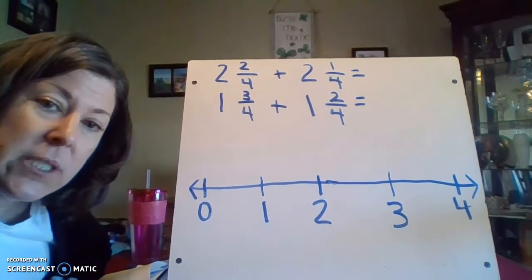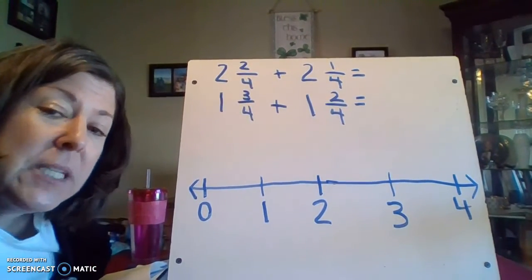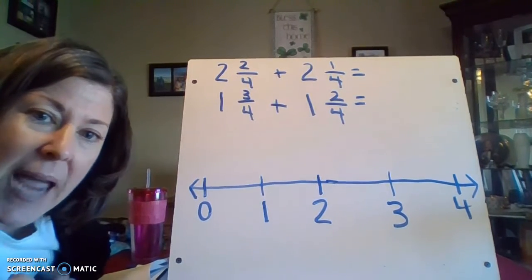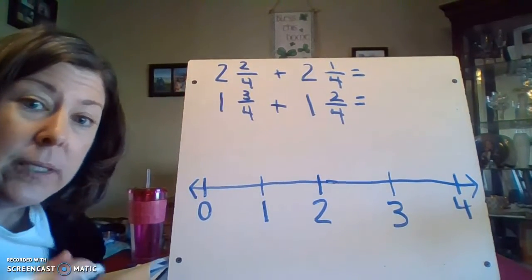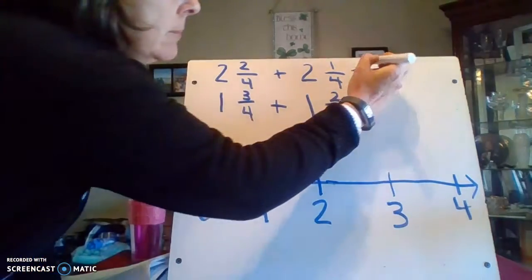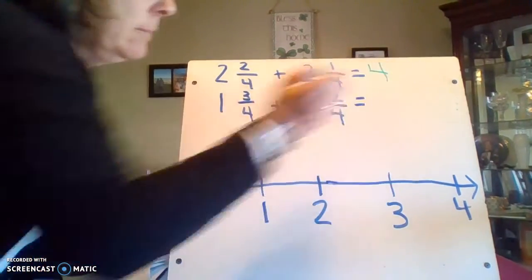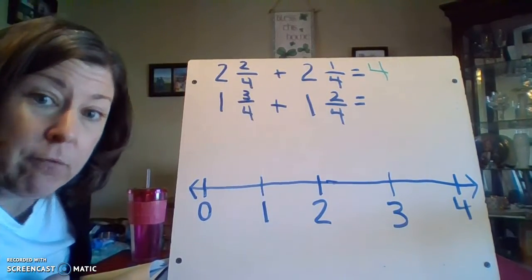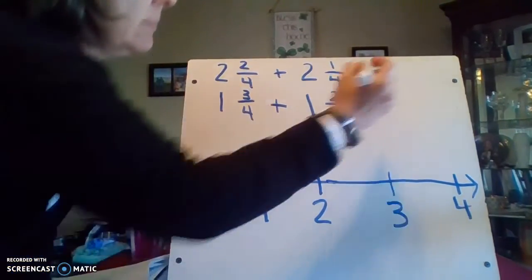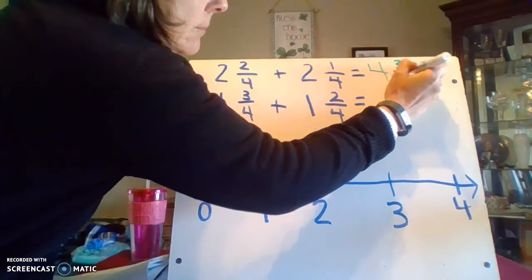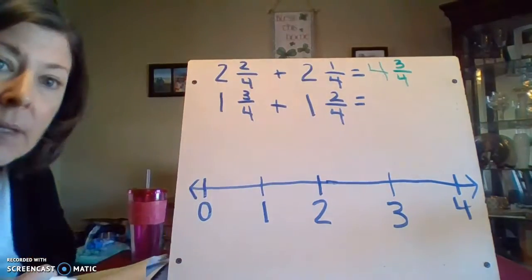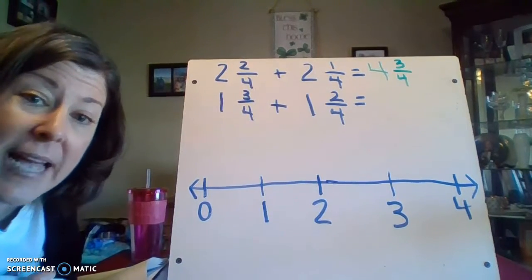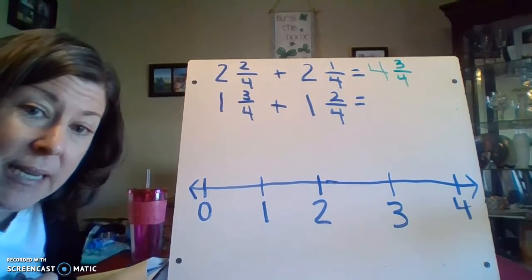Our mixed numbers in the first example: two and two-fourths plus two and one-fourth. And this is going to be pretty basic. I'm going to add the ones. Two ones and two ones gives me four ones. And then I'm going to add the fractions. Two-fourths and one-fourth gives me three-fourths. That's my answer. Two and two-fourths plus two and one-fourth equals four and three-fourths.